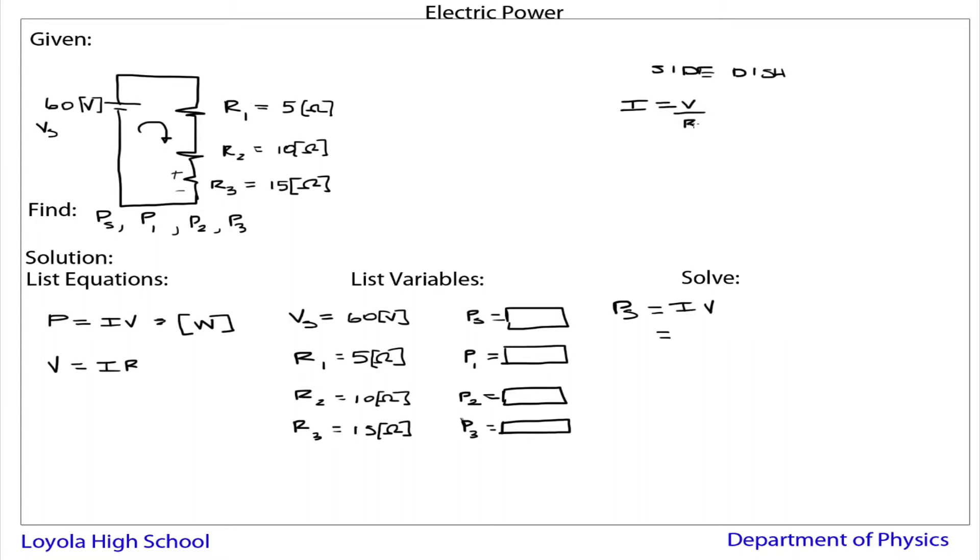And in this case, it's R total, the total resistance in the circuit. So we have a 60 volt supply, and in a series circuit, we simply add the resistances. So it's 5 plus 10 ohms plus 15 ohms, which gives me 60 over 30, or 2 amps of current. So there's 2 amps in every circuit element, because in a series circuit, as we know, the current's the same.